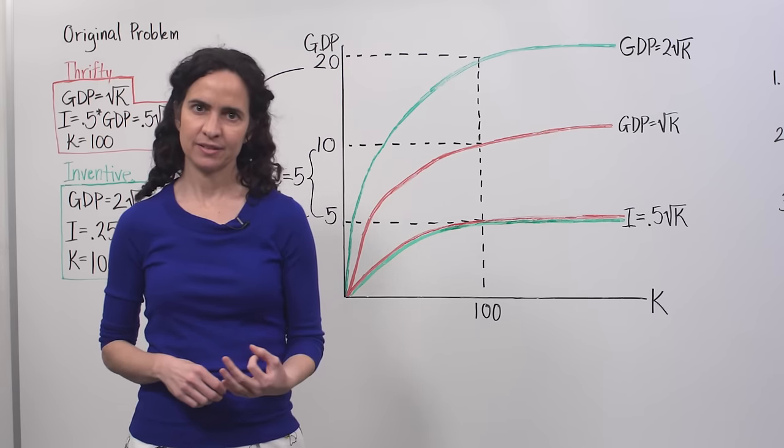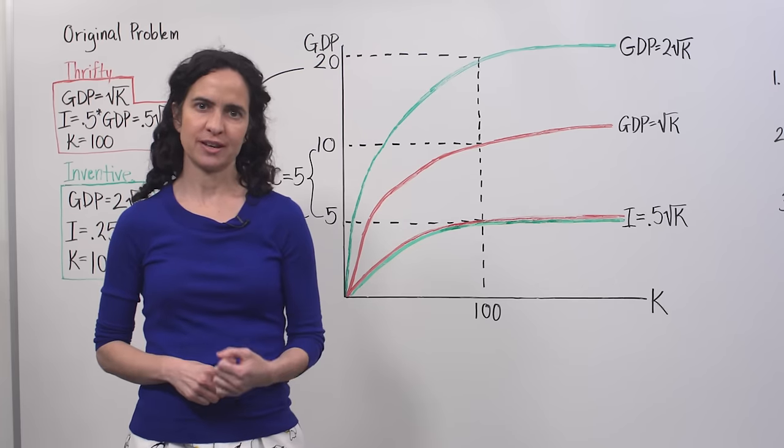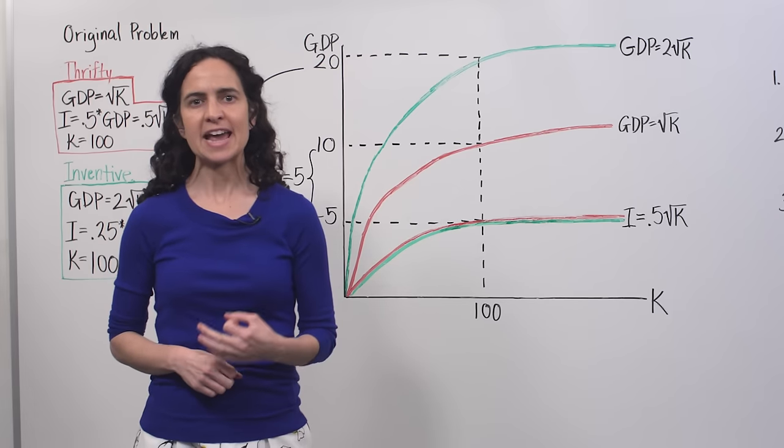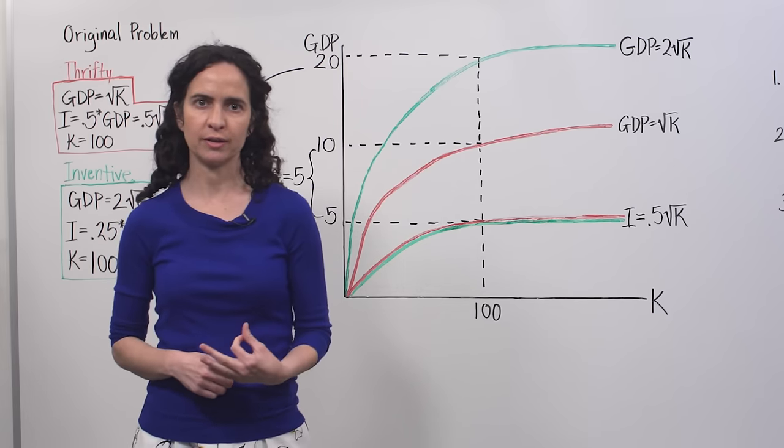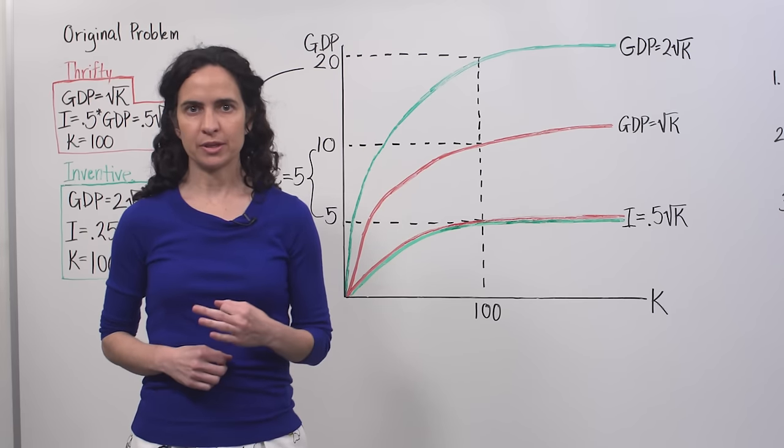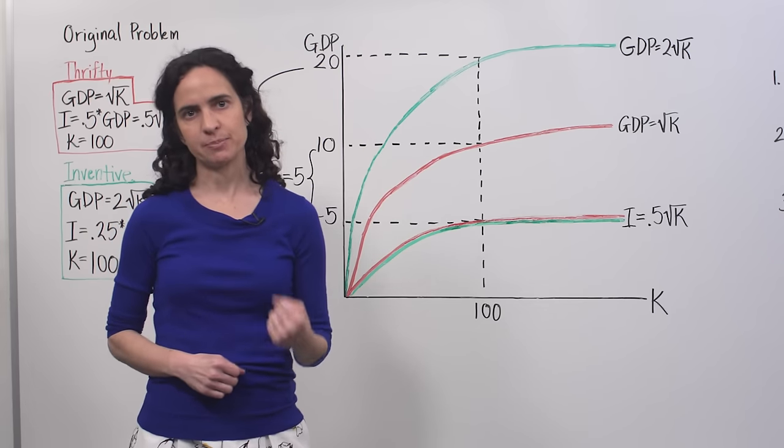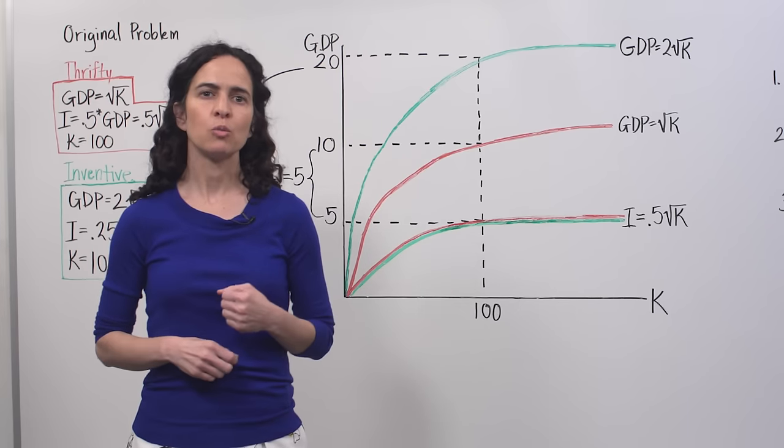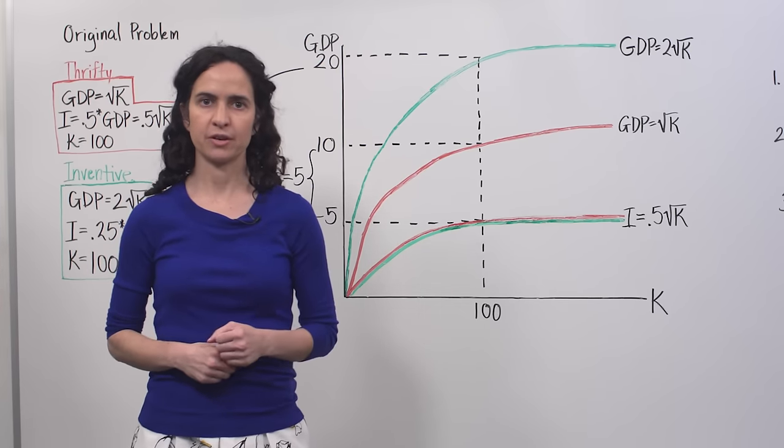And second, even though population doesn't factor directly into our super simple Solow model, it's important that the populations of these two countries are equal as the problem originally states. Given equal populations, we know that GDP and consumption per person, or per capita, will also be higher in Inventive than in Thrifty.